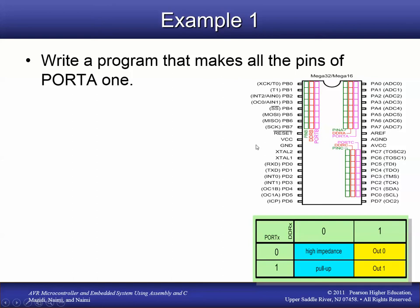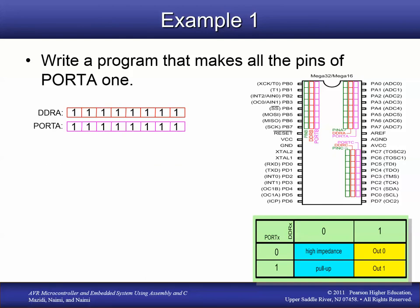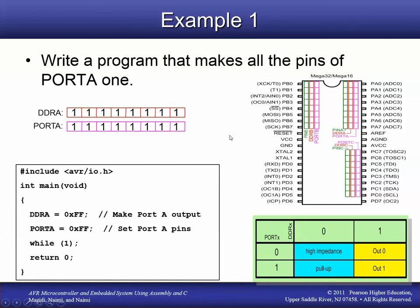We need to set the data direction register for Port A. If we want those pins to be outputs, we need ones for all the bits. Once they're outputs, we can set them to high or low voltage by writing ones or zeros to the Port A register. For all pins to be outputs and all high, we want ones to DDRA and ones to PORTA — that's 255 decimal, hex 0xFF, or all ones in binary.